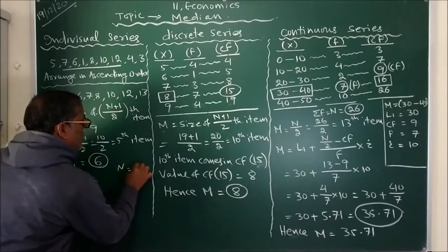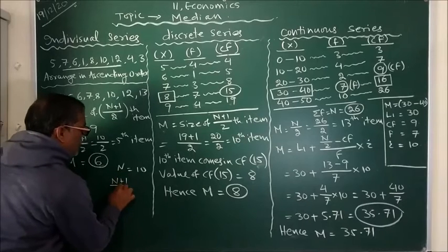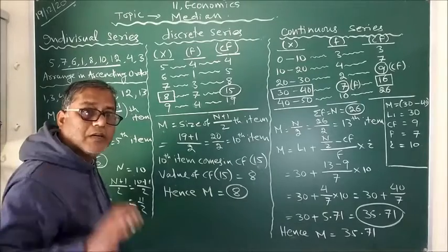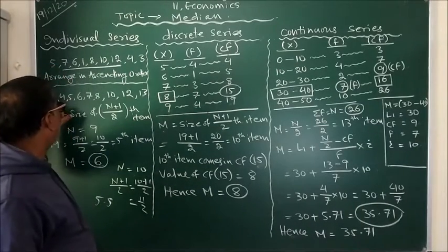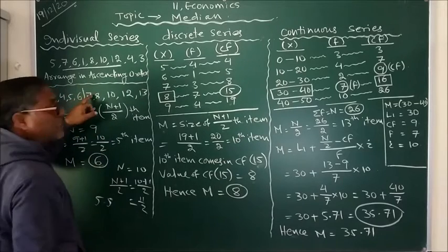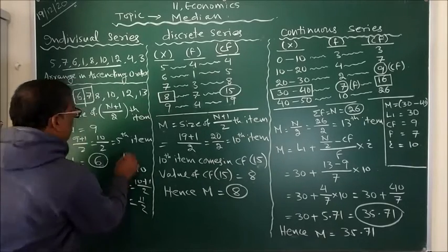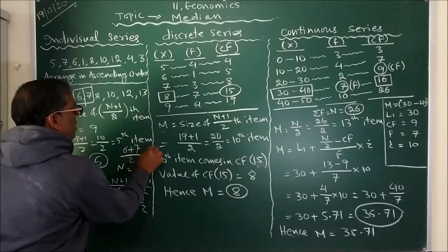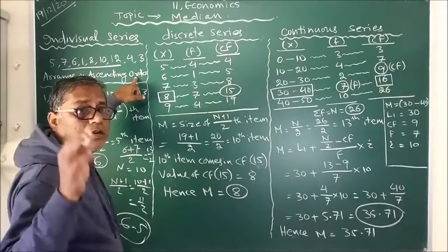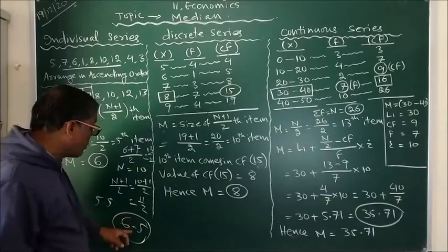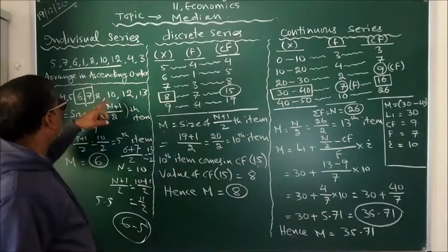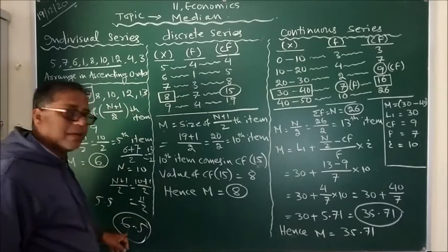Now N equals 10. Putting the formula N+1 upon 2, we get 10+1 upon 2 = 11/2 = 5.5. So how do we calculate median now? The 5.5th item lies in between the 5th and 6th item. That is why we have to take the sum of both the 5th and 6th item, that is 6+7 upon 2 = 13/2 = 6.5. Hence, if the number of observations is even, we have to take the arithmetic mean of both items around the median position. So if we add another value here, the median instead of becoming 6, it becomes 6.5.